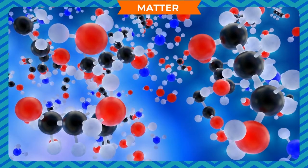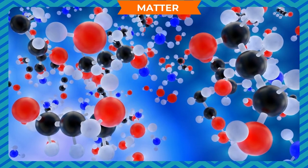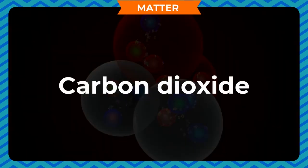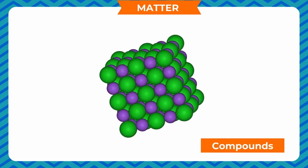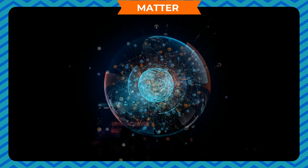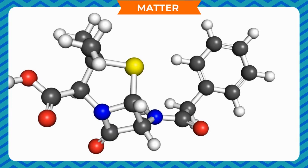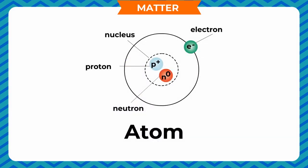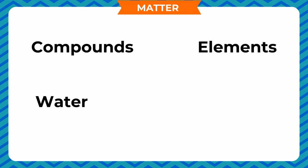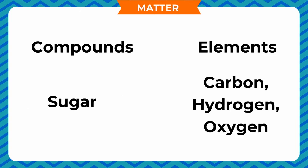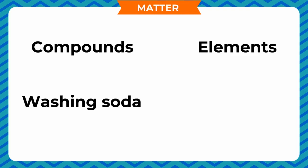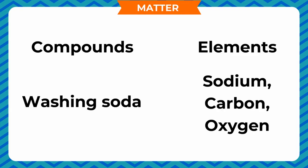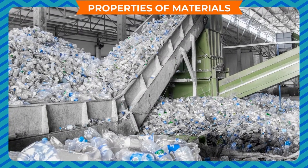Iron, gold, hydrogen, and oxygen — substances whose smallest particles are atoms — are called elements. Substances such as water, carbon dioxide, and ammonia, which are made up of two or more elements, are called compounds. The smallest particle of a compound is a molecule, made up of two or more similar or dissimilar atoms. Some common compounds and their elements: water (hydrogen, oxygen), common salt (sodium, chlorine), sugar (carbon, hydrogen, oxygen), sand (silicon, oxygen), urea (carbon, nitrogen, oxygen), washing soda (sodium, carbon, oxygen).